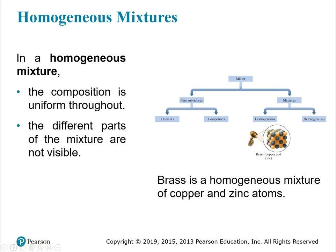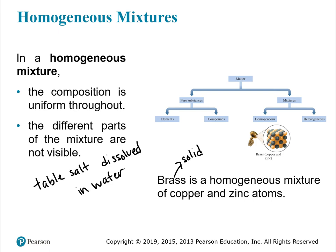In a homogeneous mixture, the composition is uniform throughout — you can't tell that you're looking at multiple different substances. One example is brass, which is a solid used to make fittings. It's a homogeneous mixture of copper and zinc; you wouldn't know that just by looking at it. Another example is table salt dissolved in water. If I put a glass of salt water and a glass of plain water next to each other, you wouldn't be able to tell the difference.